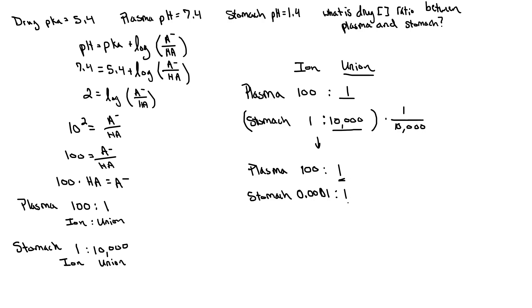So effectively I've made our unionized equal to the same concentration. So if we go back to our original question that was asked. The question is asking, what is the drug concentration ratio between plasma and stomach? So in order to do this, we need to know what is the total amount of drug. Now the total amount of drug is the unionized plus the ionized.